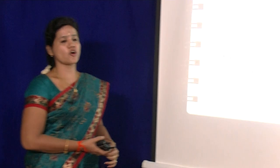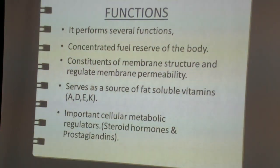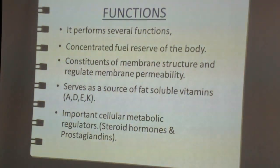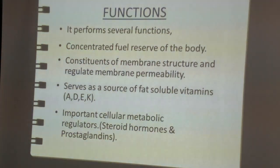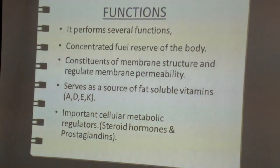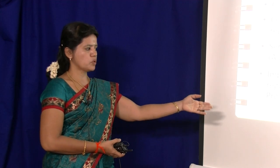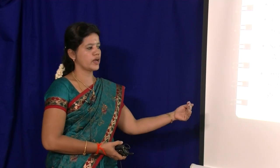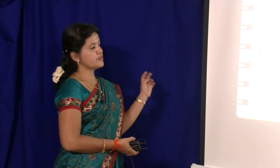Lipids serve as a source of fat-soluble vitamins. There are two groups of vitamins — fat-soluble and water-soluble. Fat-soluble vitamins A, D, E, and K require fat for their activity; they must be solubilized in the presence of fat. The last function is that lipids are important cellular metabolic regulators. Steroid hormones and prostaglandins are examples. Lipids take part in all types of anabolism and catabolism, making them very effective cellular metabolic regulators.